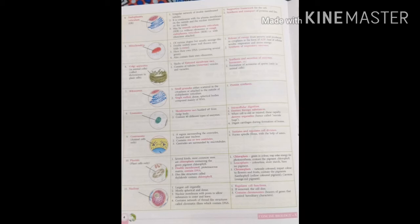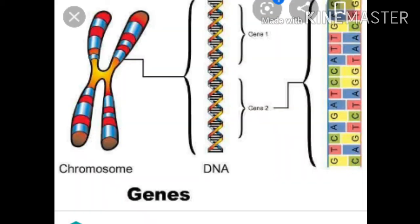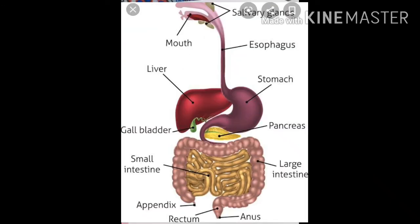Cytoplasmic inclusion — all the living and non-living structures present in the cytoplasm. Gene — a small segment of a chromosome that carries one character from parents to offspring. Organ system — a group of organs performing a specific function; for example, the digestive system includes organs like the stomach, small intestine, large intestine, rectum, etc.